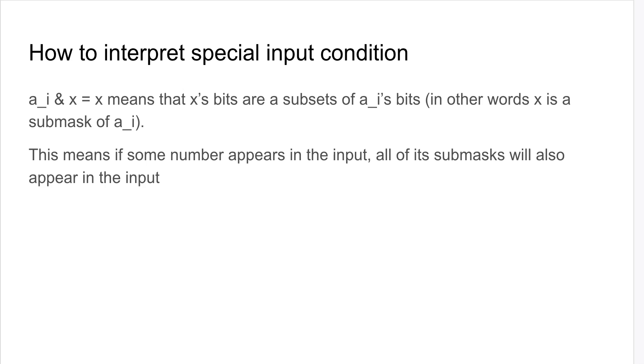The first step is to interpret the special input condition because it's a little unusual. If I look at this equation, a_i & x = x means that x's bits are a subset of a_i's bits. In other words, x is a submask of a_i. This means if some number appears in the input, all of its submasks will also appear in the input.